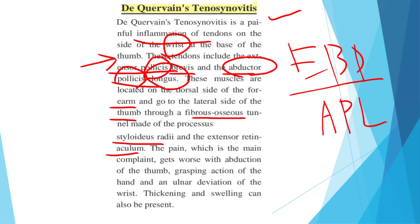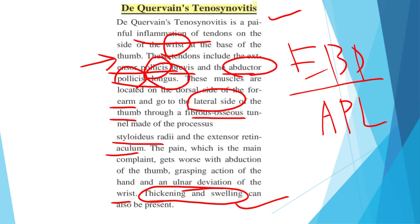This condition presents on the lateral side of the thumb. The main complaint, pain, goes towards the abduction and grasping area of the hand and with ulnar deviation of the wrist. Thickening and swelling are also present due to inflammation. The patient feels pain during both abduction and extension movements.